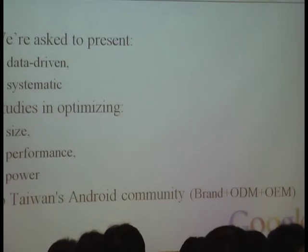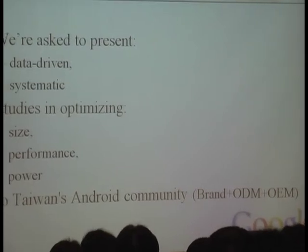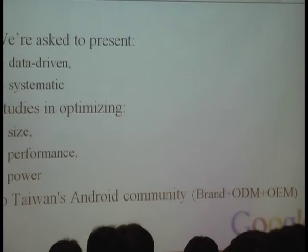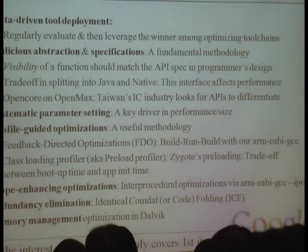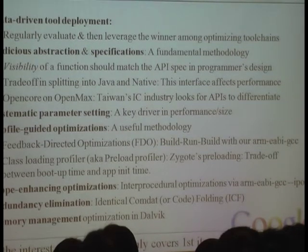Initially, we were thinking of doing systematic and data-driven studies in optimizing size and performance for the Android community here. The outline covers seven optimization strategies.